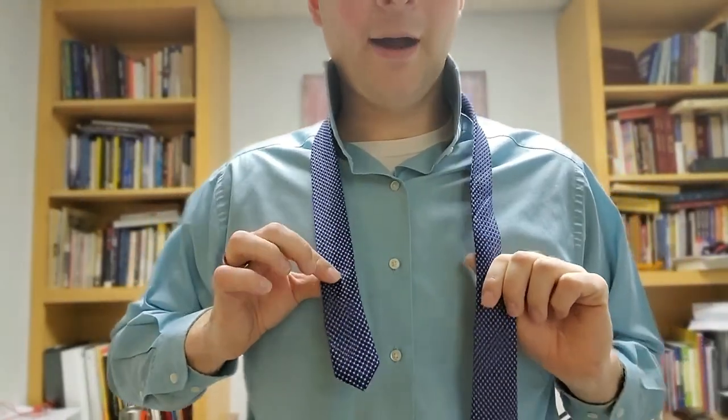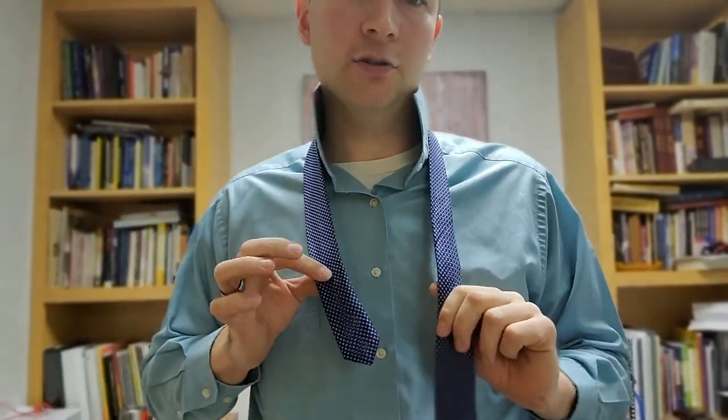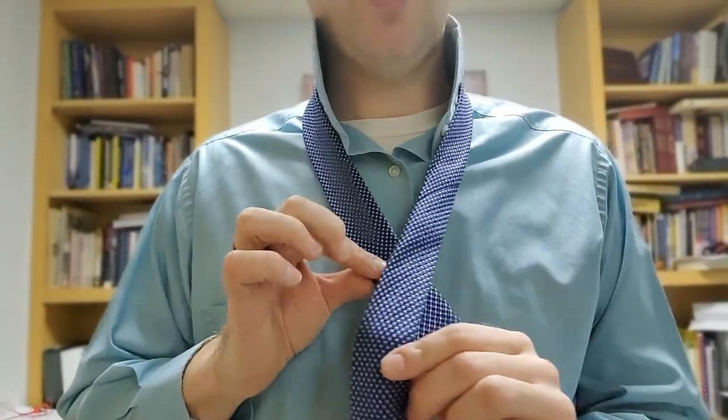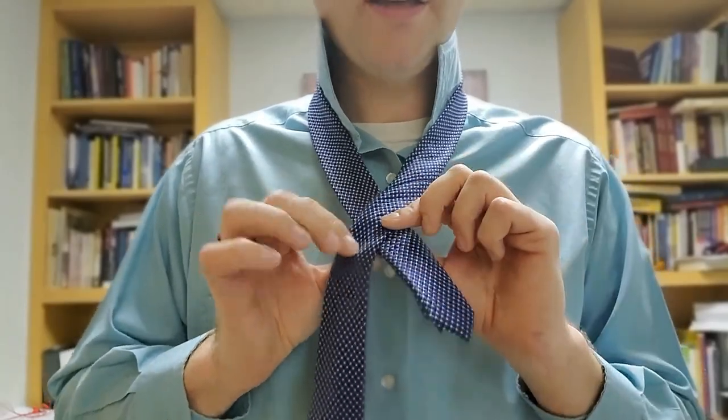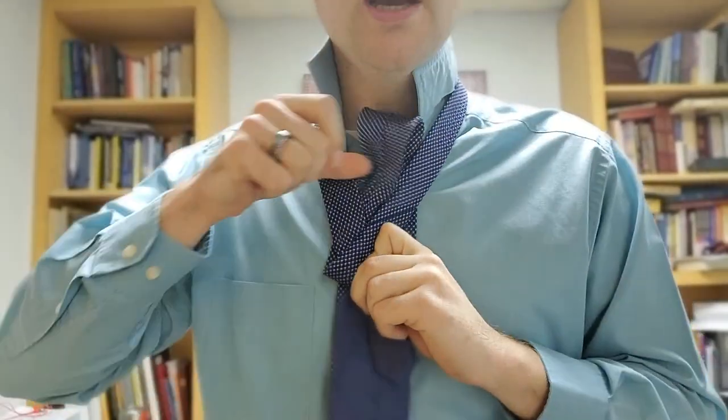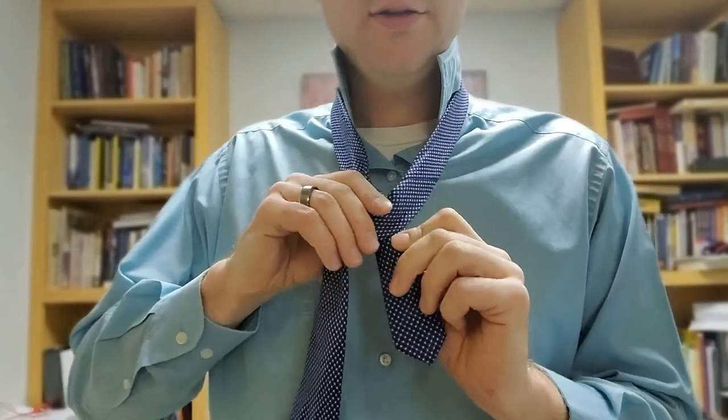So what you do is start, you might want to start with a little more on the long end. This uses a little more fabric than the last two knots. So what you're going to do is go over the short end with the long end and go up around the short end.